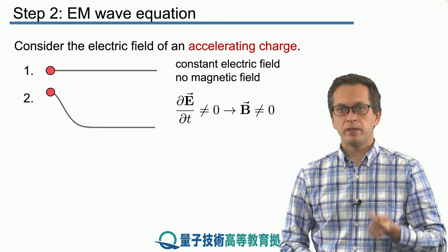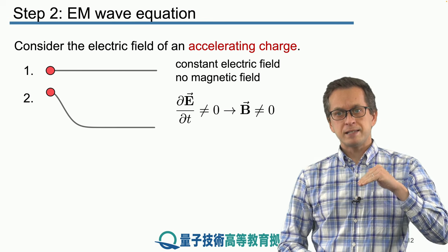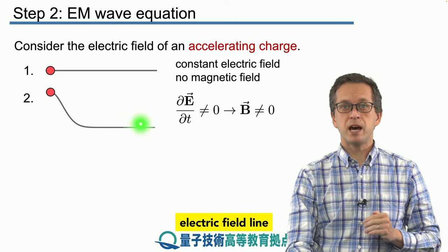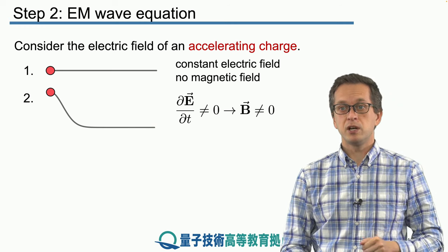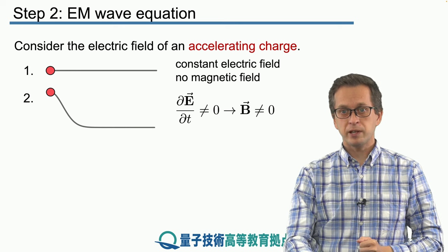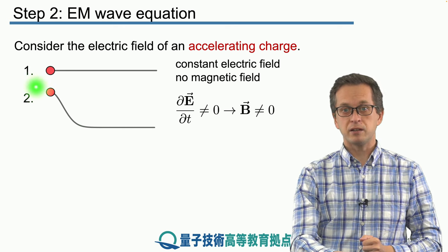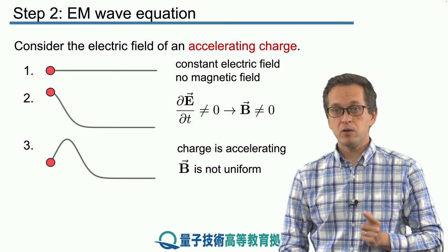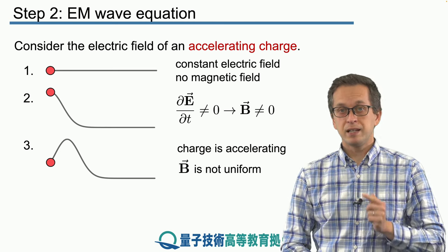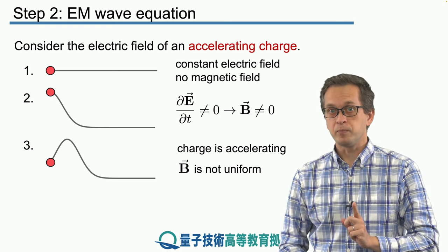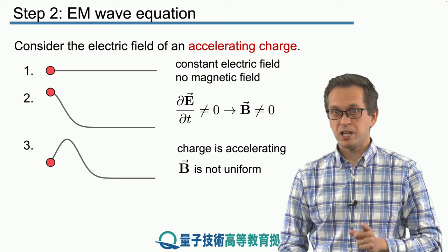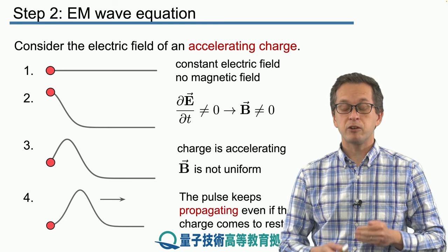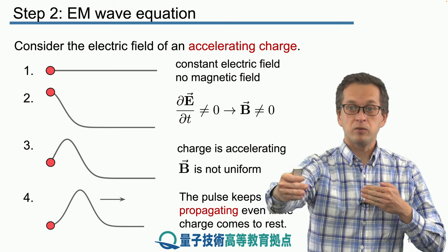At a distant position, the electric field line doesn't yet know we have changed the position of the charge because the signal has not propagated there. The electric field looks like it has a kink. As we move the charge downwards, we create a pulse. Because the electric field is varying in time, this gives rise to a magnetic field. Furthermore, if the change in the electric field is non-uniform, it creates a non-uniform magnetic field — in other words, a pulse traveling through space.